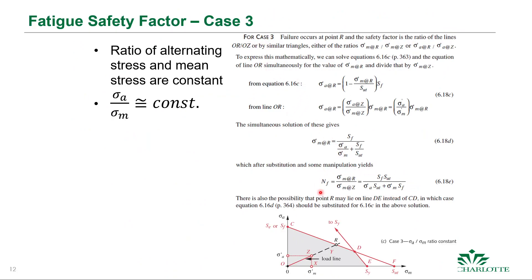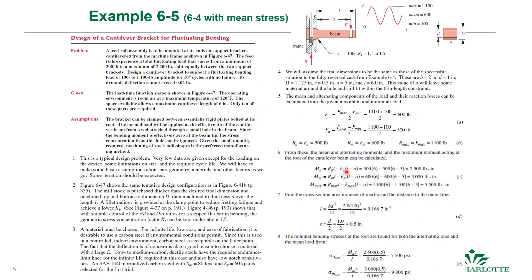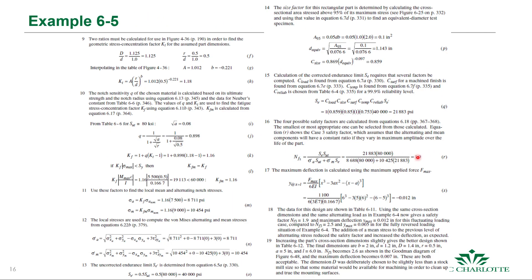Using case 3 — because both alternating and mean stresses are derived from the same applied load and therefore vary in proportion — the safety factor equation gives a result of 1.9. Maximum deflection is calculated using the beam deflection equation with F_max, and it is less than 20 thousandths of an inch, satisfying the deflection constraint.